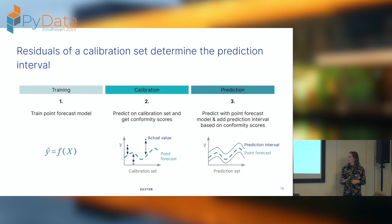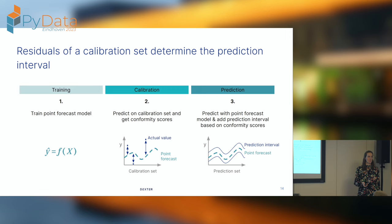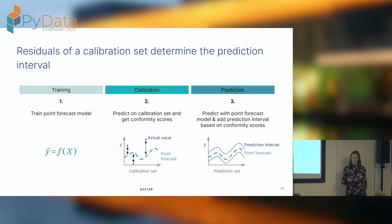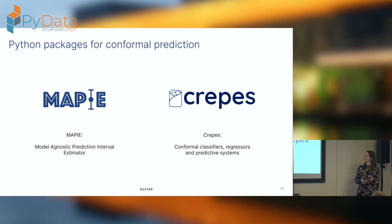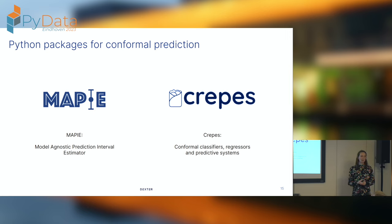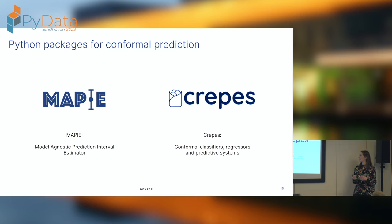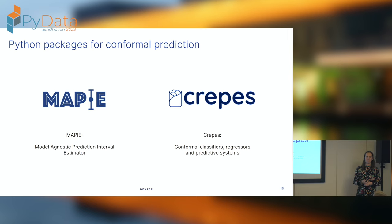A small recap: you train your point forecast model, you use the calibration set to see what actually happens with the actual values, and based on that you add a prediction interval to your forecast. Now, talking about Python — we're at PyData. There are nice packages for this. The most used is MAPIE, a really early and very extensive package. A newer package I personally like is CREPES, which I find a bit more user-friendly, especially if you want to dive into the code. Both do pretty much the same thing.